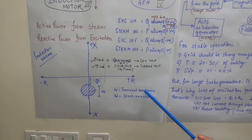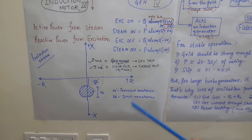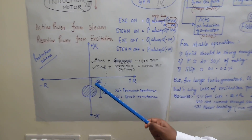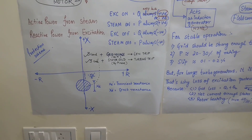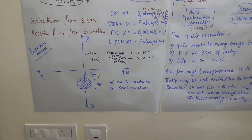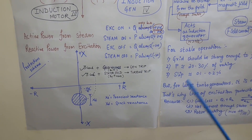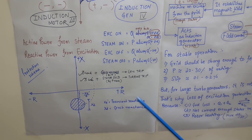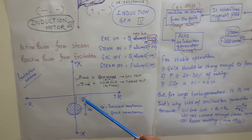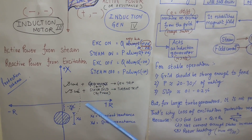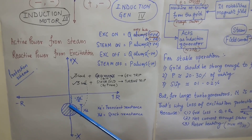Xd' is the transient reactance of the generator. The reason for taking this offset is that during the vibration condition of the generator at a load angle of 180 degrees, the impedance measured at the terminal of the generator comes out to be Xd' by 2. So we are taking this offset to avoid tripping during vibration of the generator.